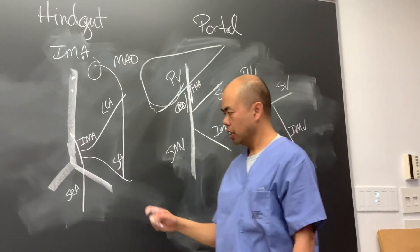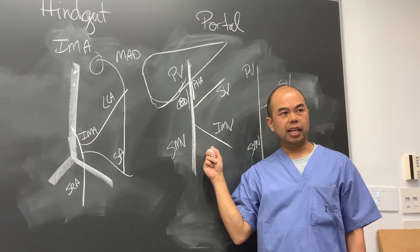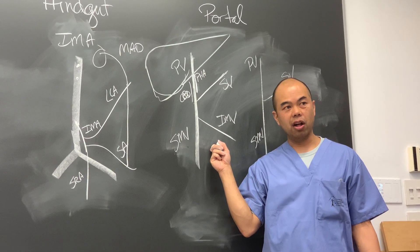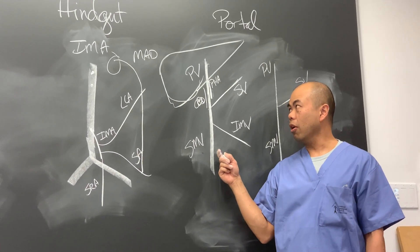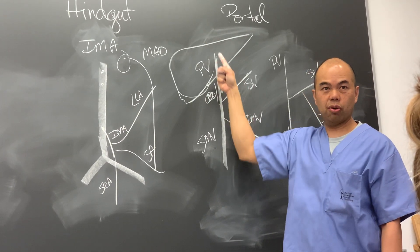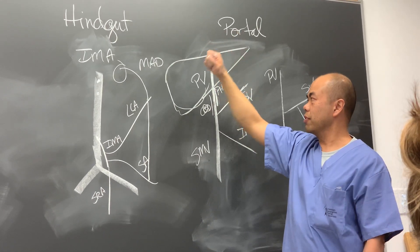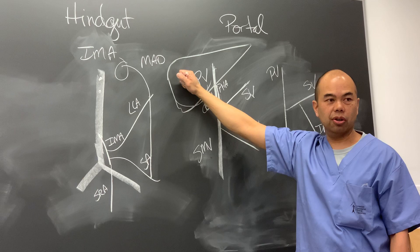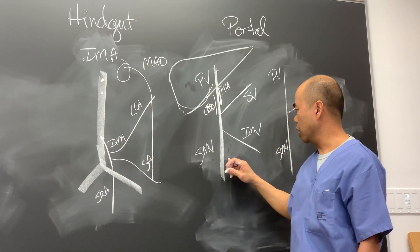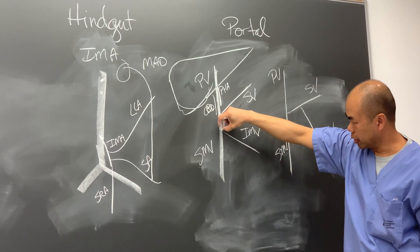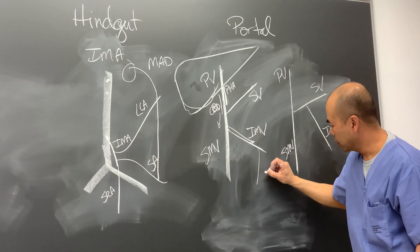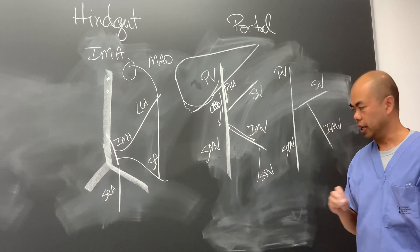There are no valves in the portal venous system - the only other place in the body where veins have no valves is the head. All these veins drain blood into the liver very passively and slowly. If the liver gets blocked, the blood will flow in reverse - one common direction is down to the rectum via the superior rectal vein.